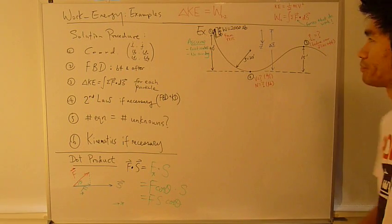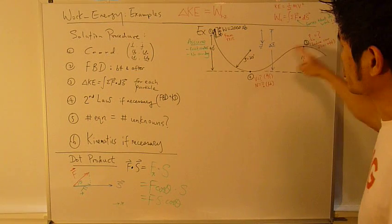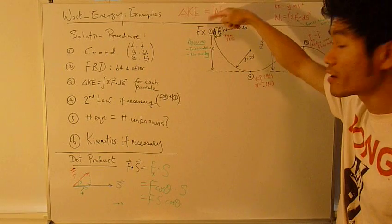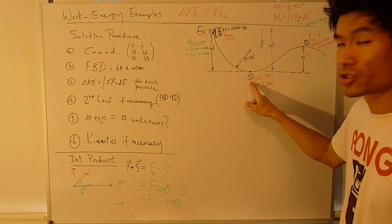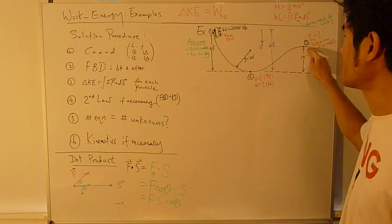Alright, let's look at an example. Now we have a roller coaster on this track right here. Starting from rest at position 1, this is position 2 which is at the bottom of the track, and position 3 up here.